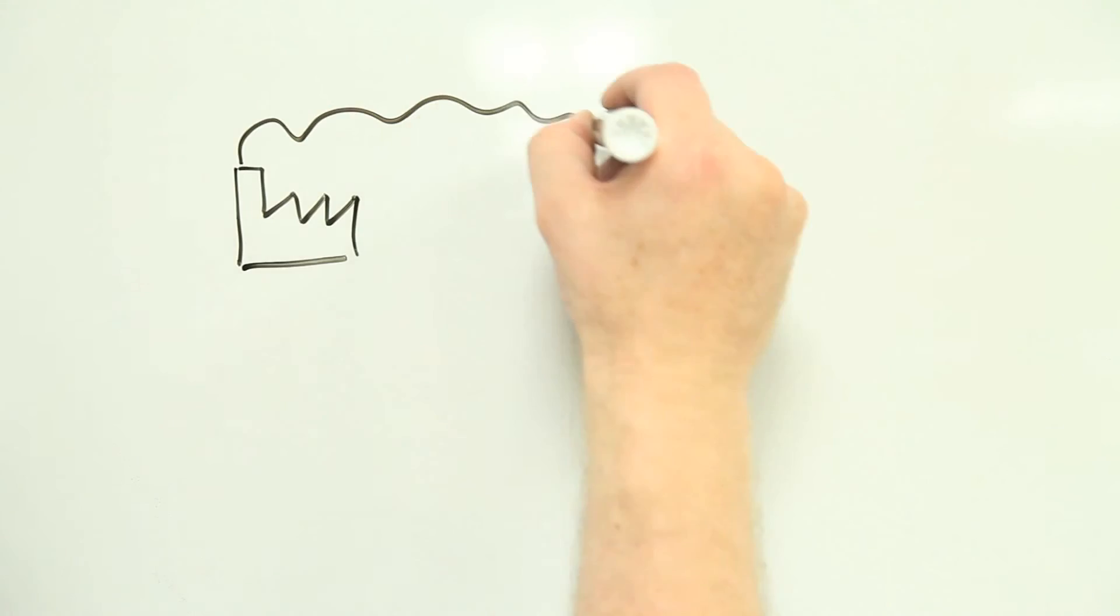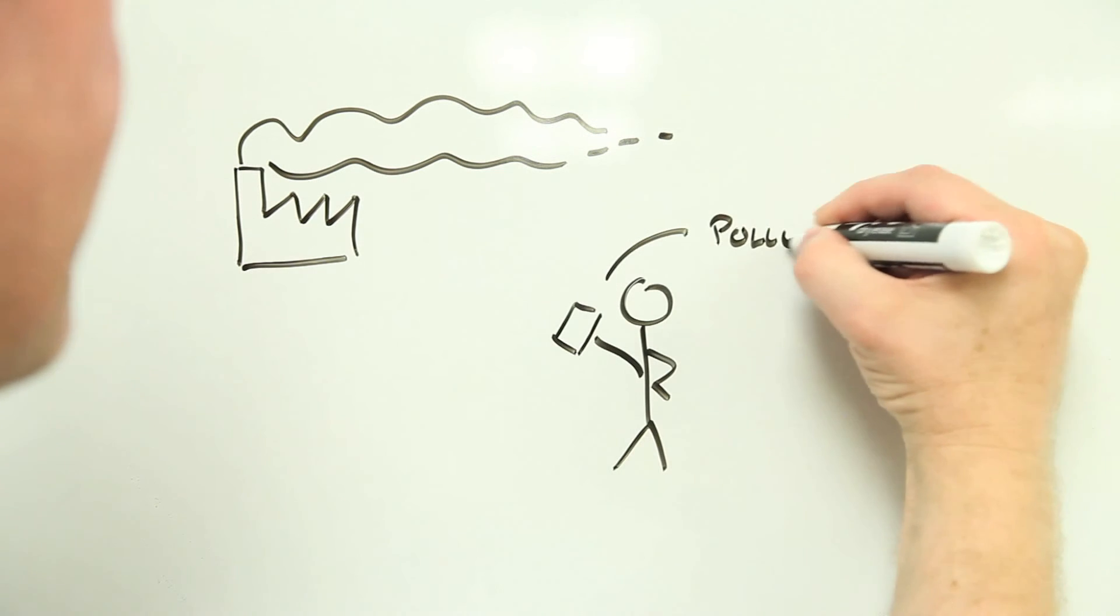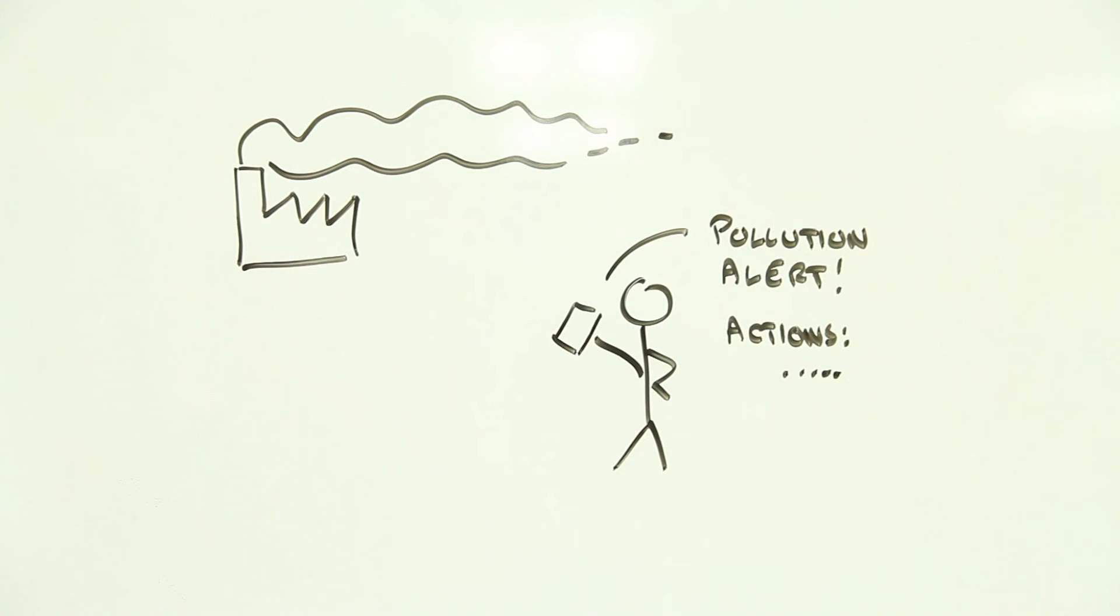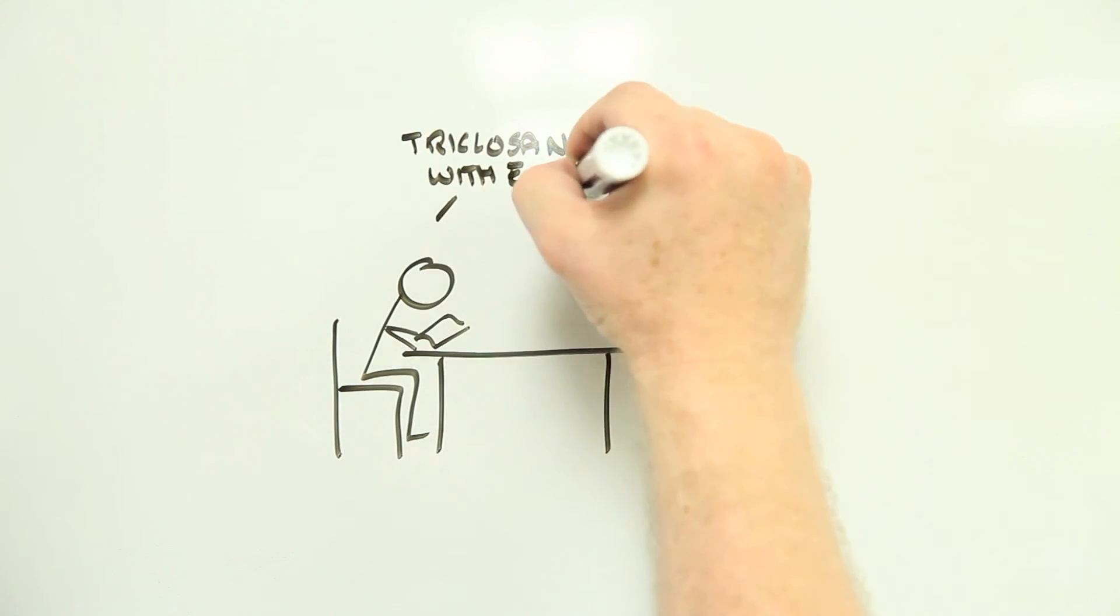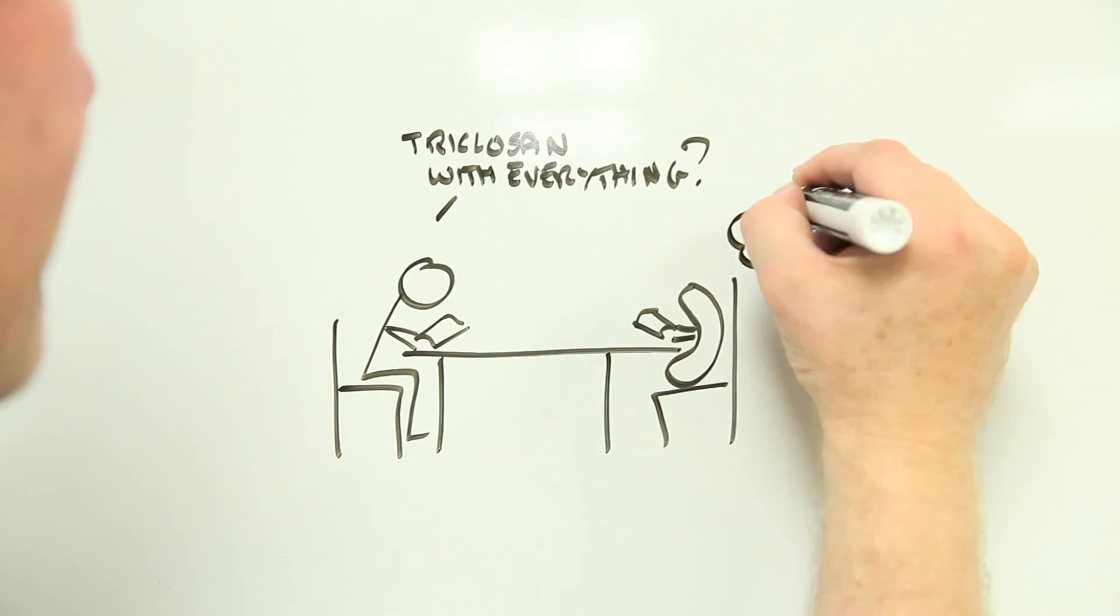Four, give people more control over the pollution they breathe using smartphones, smart sensors and smart communication. Five, get imaginative about ways to slow the spread of antimicrobial resistant bacteria.